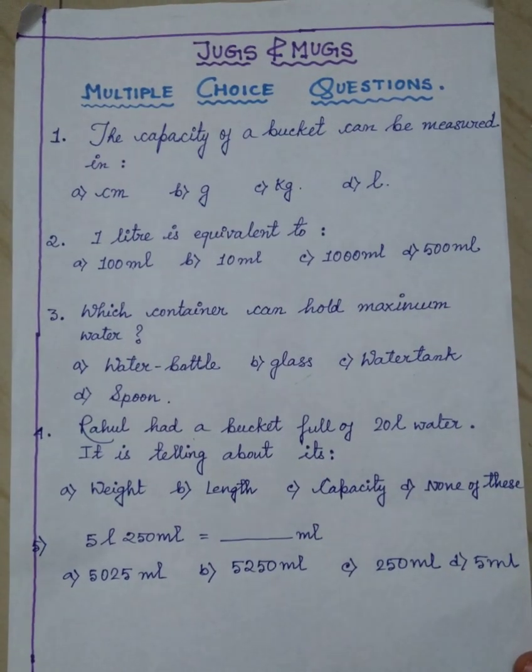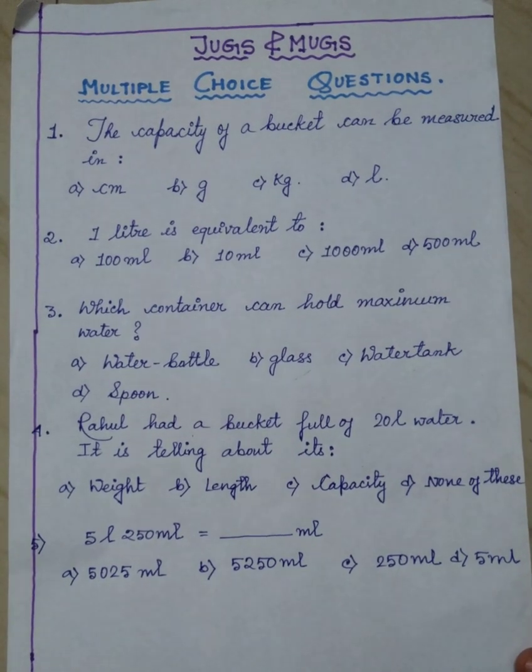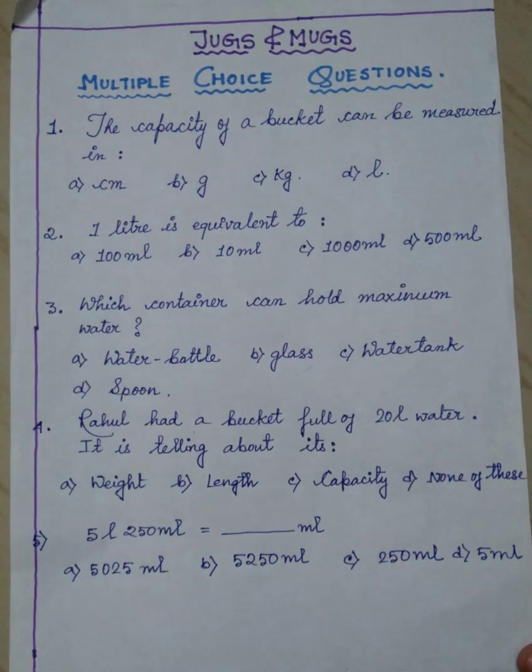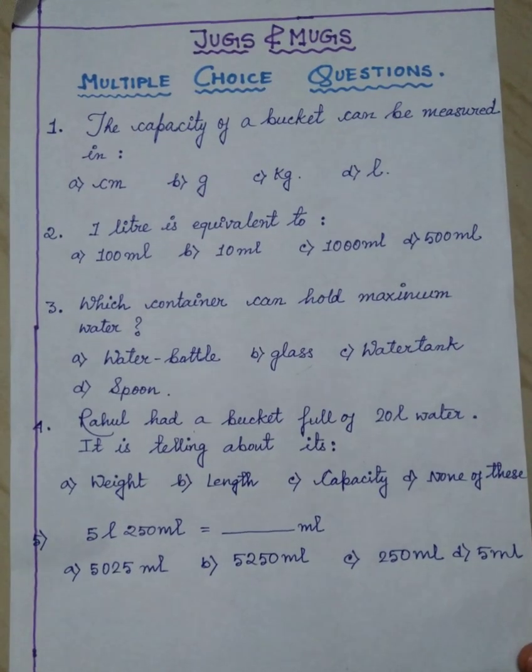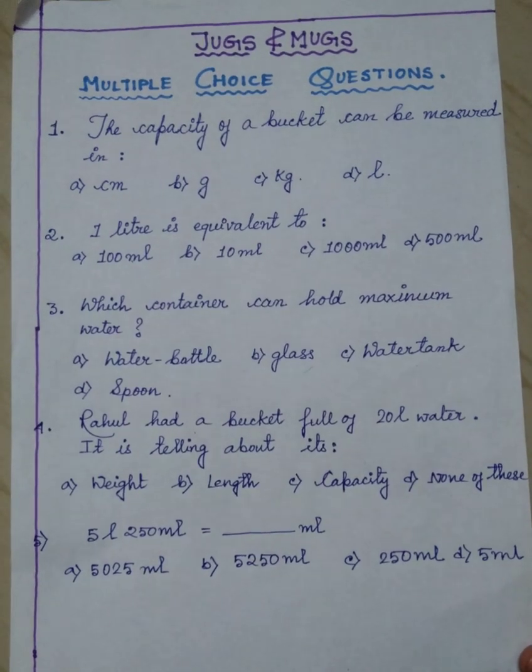Now for the first sum, the capacity of a bucket can be measured in. Options are centimetre, gram, kilogram, litre.